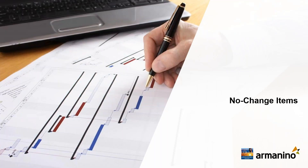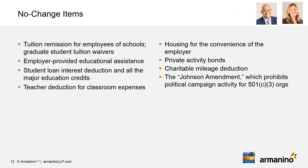We first wanted to go over a couple of items that were discussed early on but did not end up in the final bill. These items generated a lot of worry and discussion, so we want to point out which ones didn't change in order to put your minds at ease. First, qualified tuition reductions will remain non-taxable to employee recipients, including tuition remission for school employees and graduate student tuition waivers.